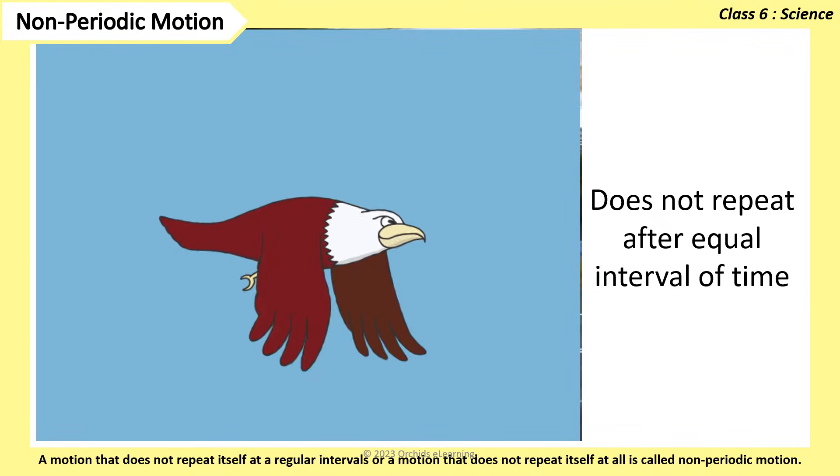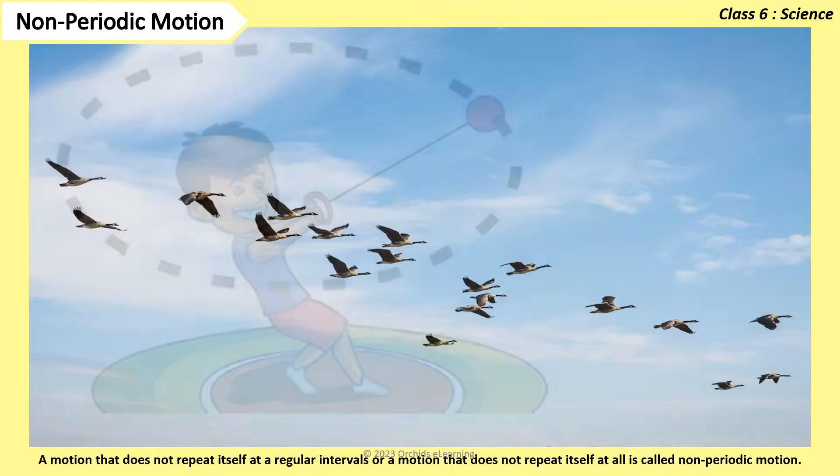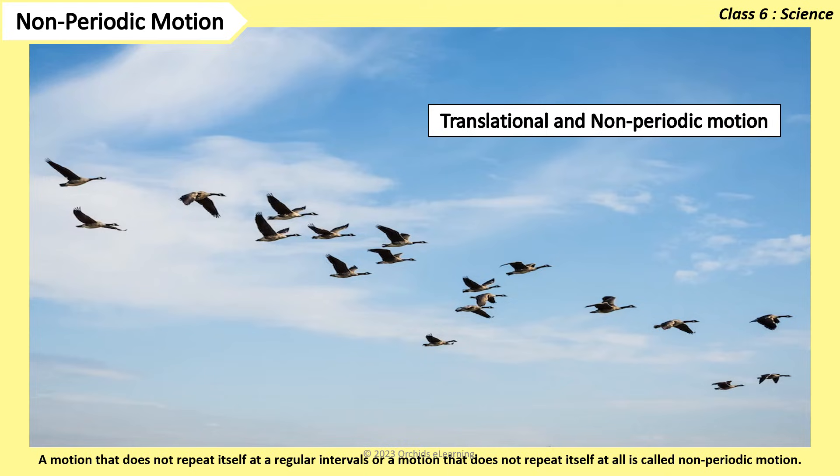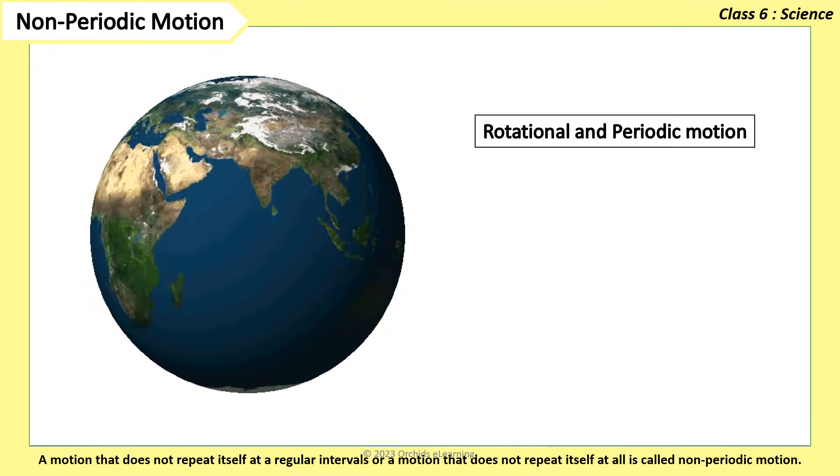In everyday life, we observe more than one type of motion such as birds gliding across sky, which shows translational and non-periodic motions. Rotation of earth shows rotational and periodic motion.